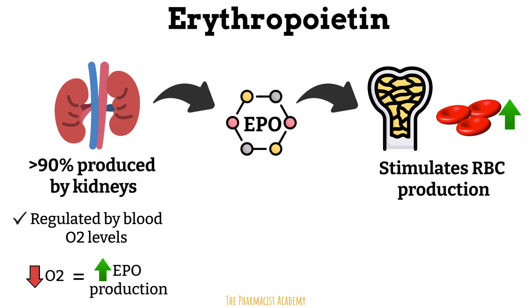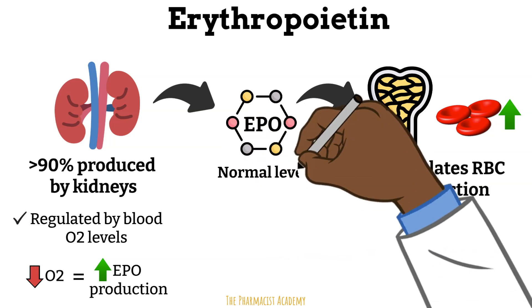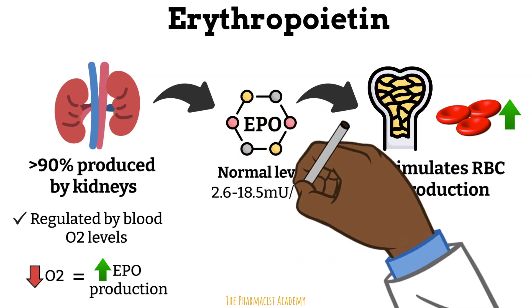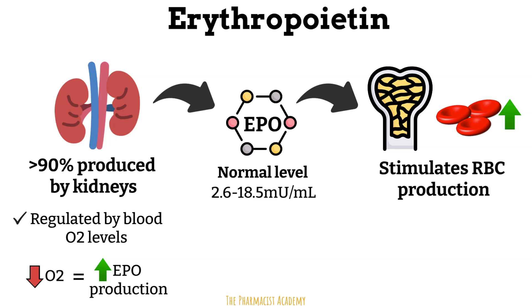Without any significant hypoxia, the EPO normal range is between 2.6 to 18.5 mU per milliliter. But in the presence of hypoxia, it can reach up to a thousand. Knowing this, EPO levels can help with the diagnosis of certain conditions.